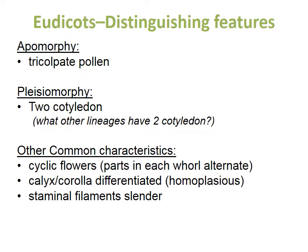You'll also see differentiation between the calyx and the corolla, which is homoplasious with differentiated calyces and corollas in some other lineages. Finally, the filaments of the stamens will be slender — you don't see any examples of petaloid stamens like those seen in some monocots and some magnolias or early diverging angiosperms of the ANA grade. Part of the reason for the lack of distinguishing features in this clade is probably due to rapid diversification, meaning there may not have been time for particular morphological features to become fixed.